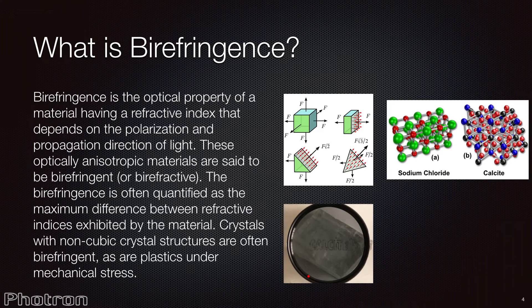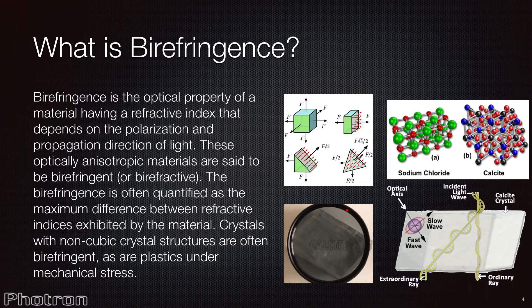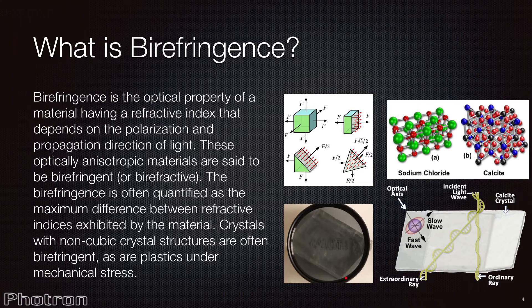Calcite is another example, where light is refracted into two rays, the ordinary ray and the extraordinary ray, that is dependent on the refractive index of the material. One of these rays will typically travel slower than the other. This difference is defined as the retardation. Birefringence, or double refraction, is the optical property of a material having a refractive index that depends on the polarization and propagation direction of light.